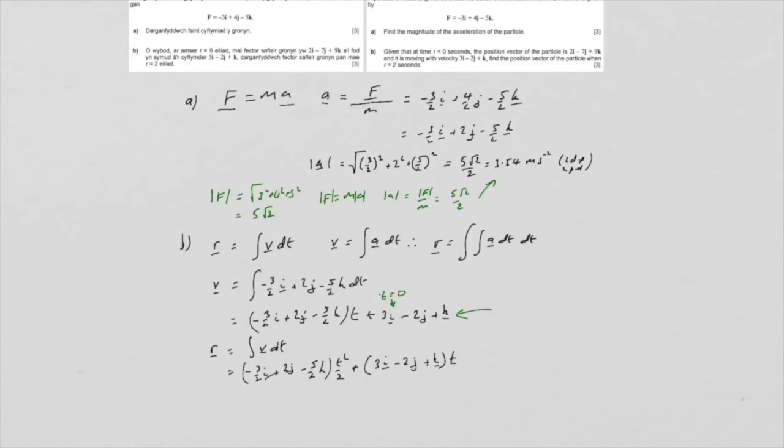And as before, we know what R is when T is equal to 0. So that's the position vector at T equals 0 is 2i minus 7j plus 9k. So R is therefore, well, if we put T equals 2 into here, because that's the time that we're interested in, then the first term, T squared, is going to be 4 over 2, so that's 2. So that's going to give us minus 3i.